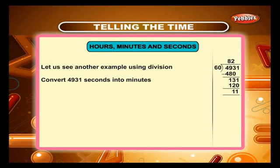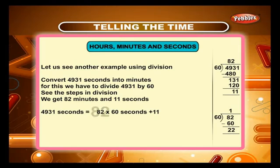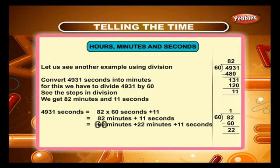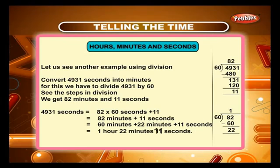Convert 4931 seconds into minutes. For this, we have to divide 4931 by 60. See the steps in the division — we get 82 minutes and 11 seconds. So, 4931 seconds equals 82 times 60 seconds plus 11 seconds, which equals 82 minutes plus 11 seconds, which equals 60 minutes plus 22 minutes plus 11 seconds, which equals 1 hour 22 minutes and 11 seconds.